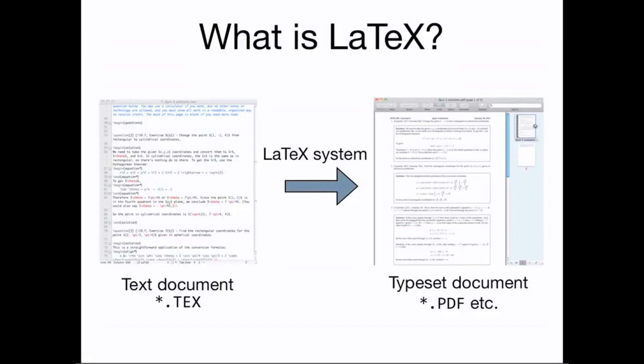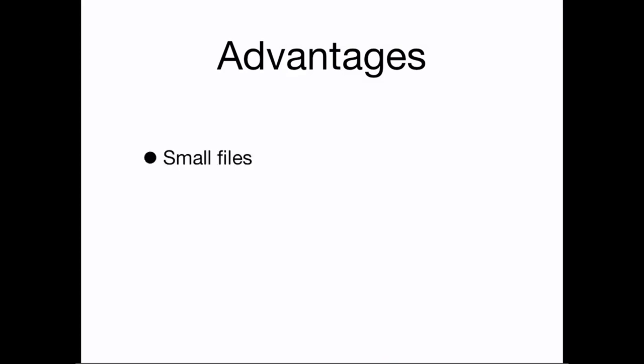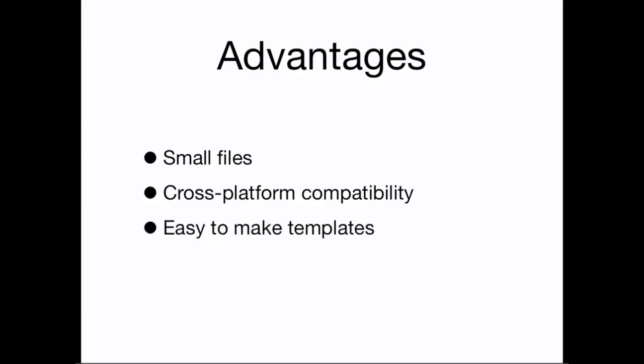Once the code is compiled successfully, LaTeX produces a PDF that contains the finished product. Other file types, such as encapsulated postscript, are also possible. This 3-step system is more complicated than using a single word processor, but in some ways it's actually simpler because the source codes are small, can be shared across multiple platforms with no compatibility issues, and because you can create reusable templates.